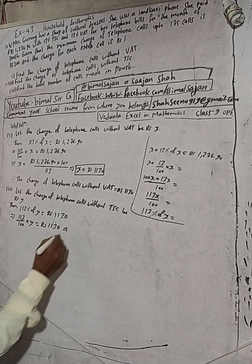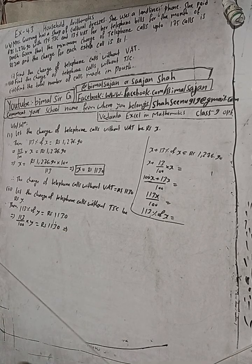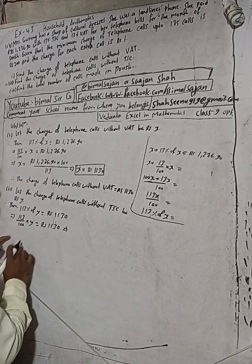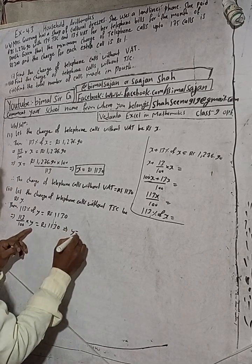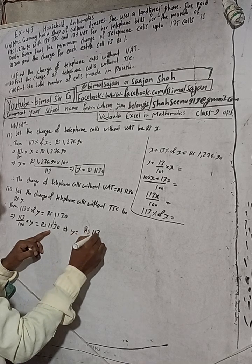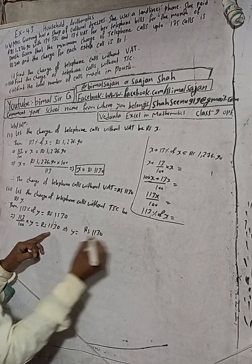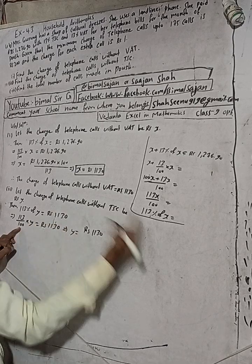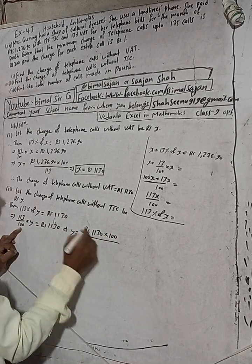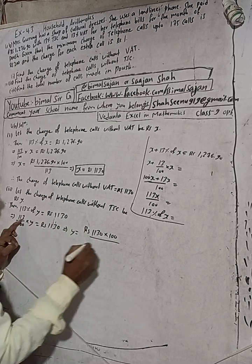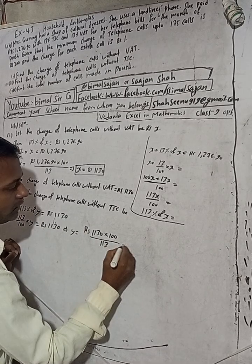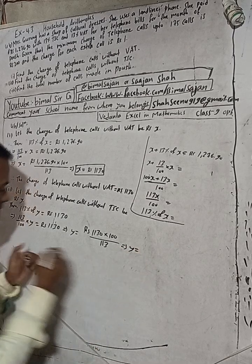Now here, y is on the left side and Rs 1,130 is on the right side. When 100 goes to the right side it becomes multiplied, and 113 when it goes to the other side it will divide. This implies y is equal to 1,130 multiplied by 100 divided by 113.